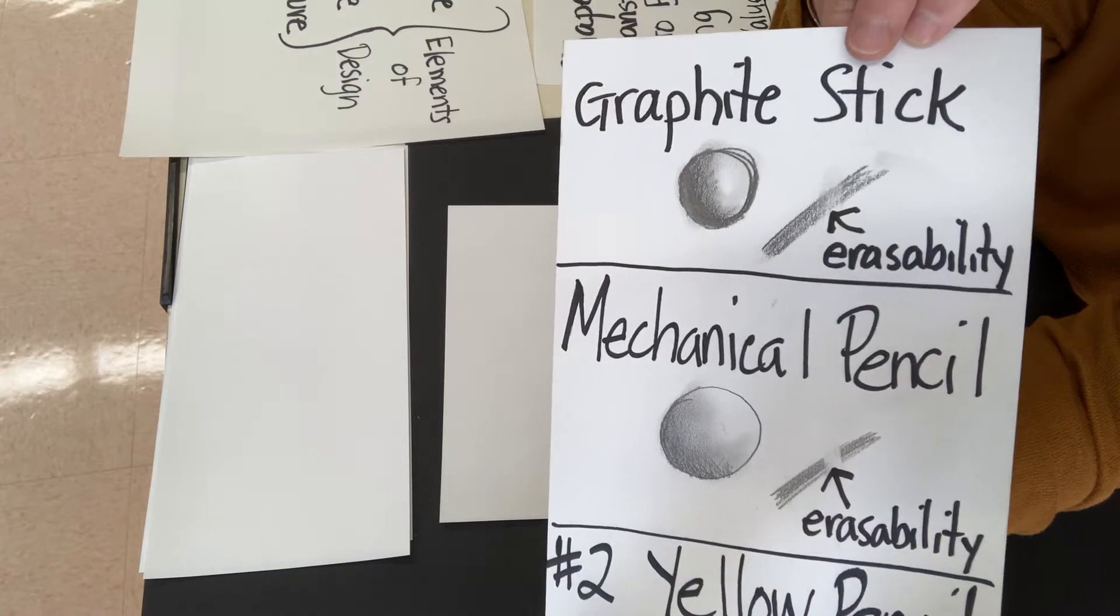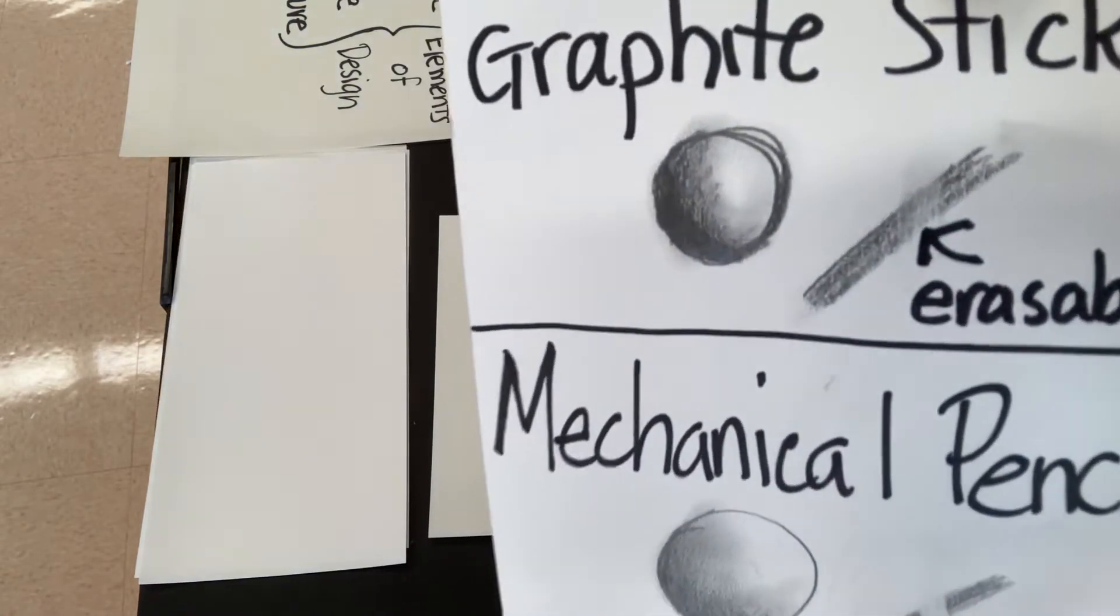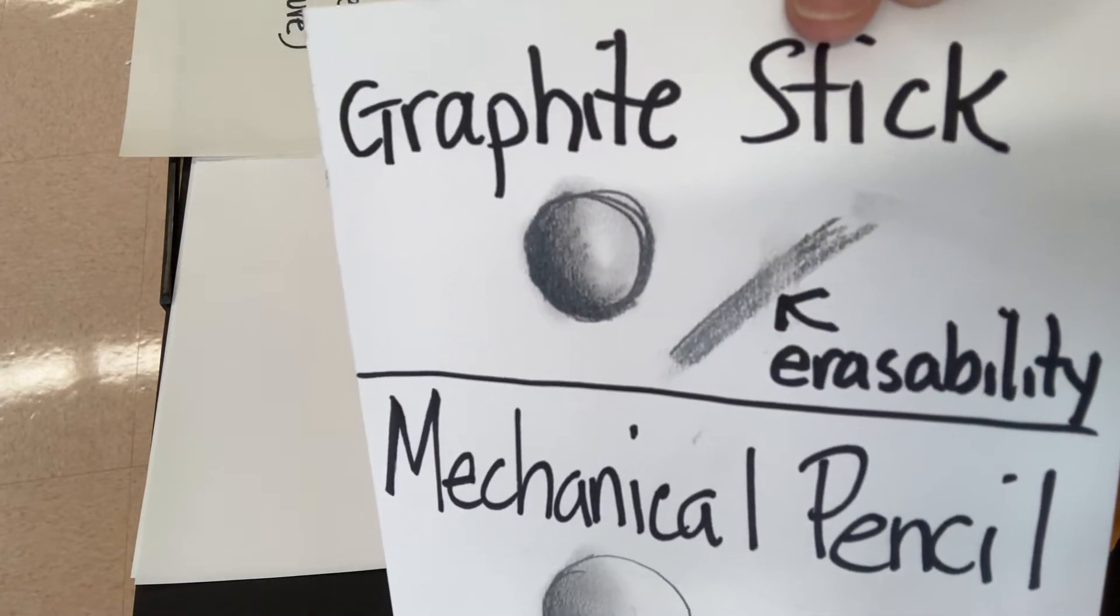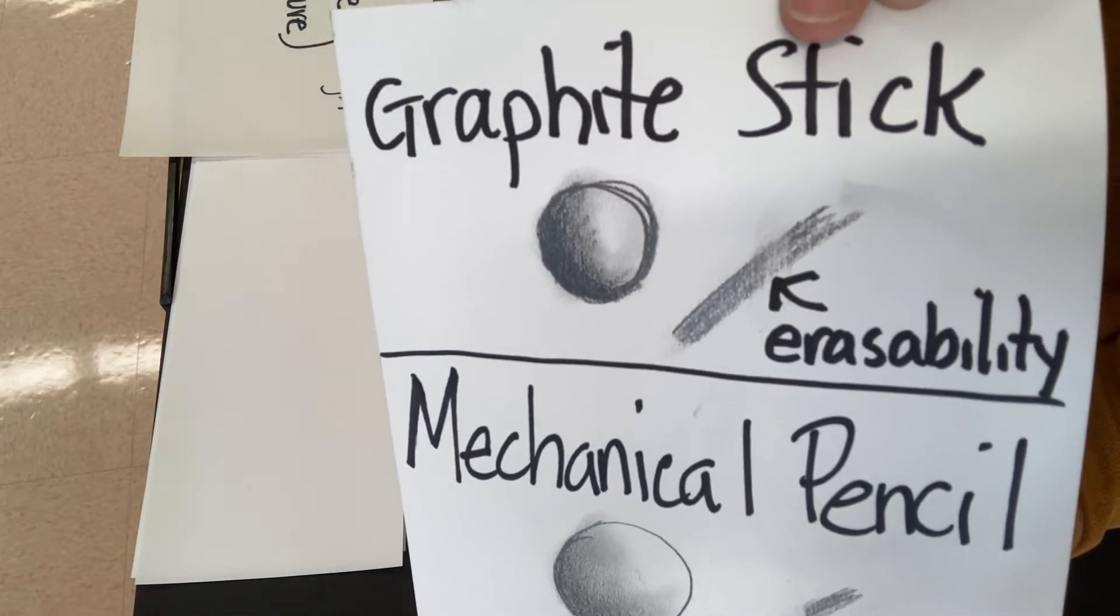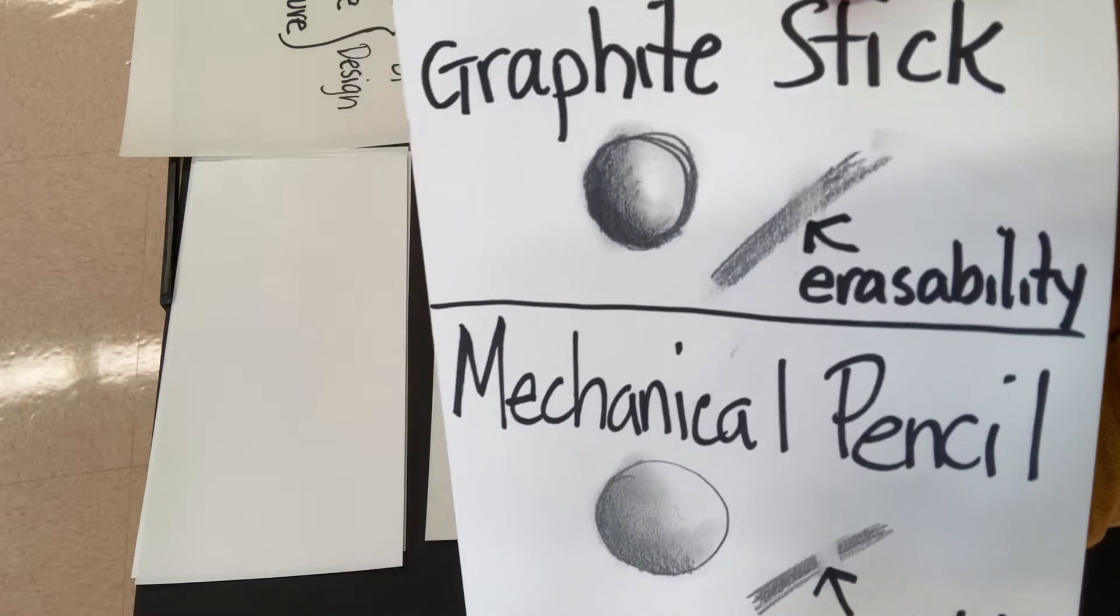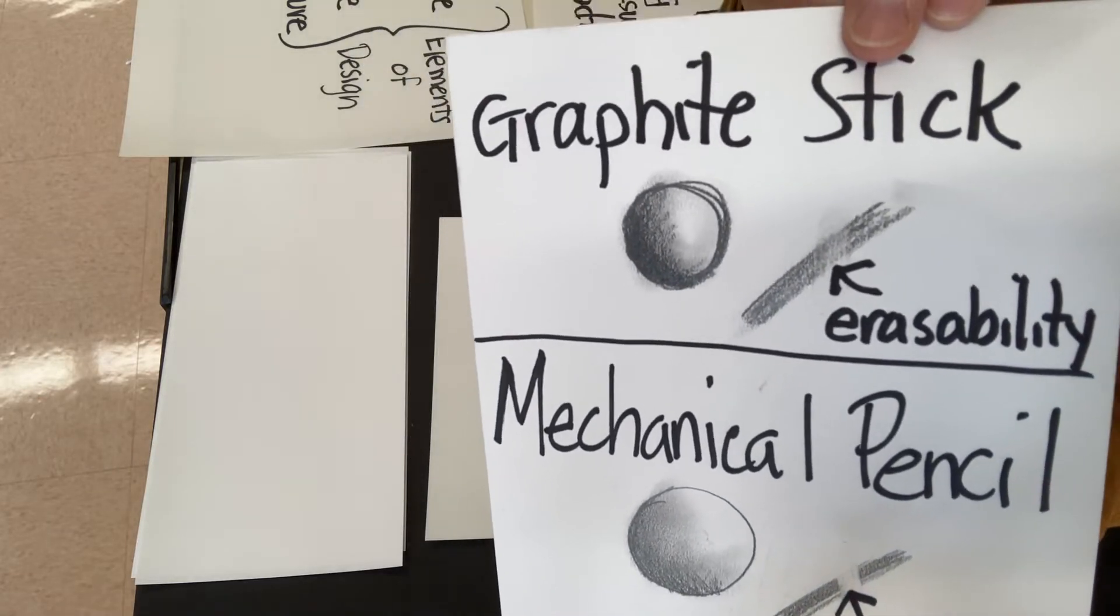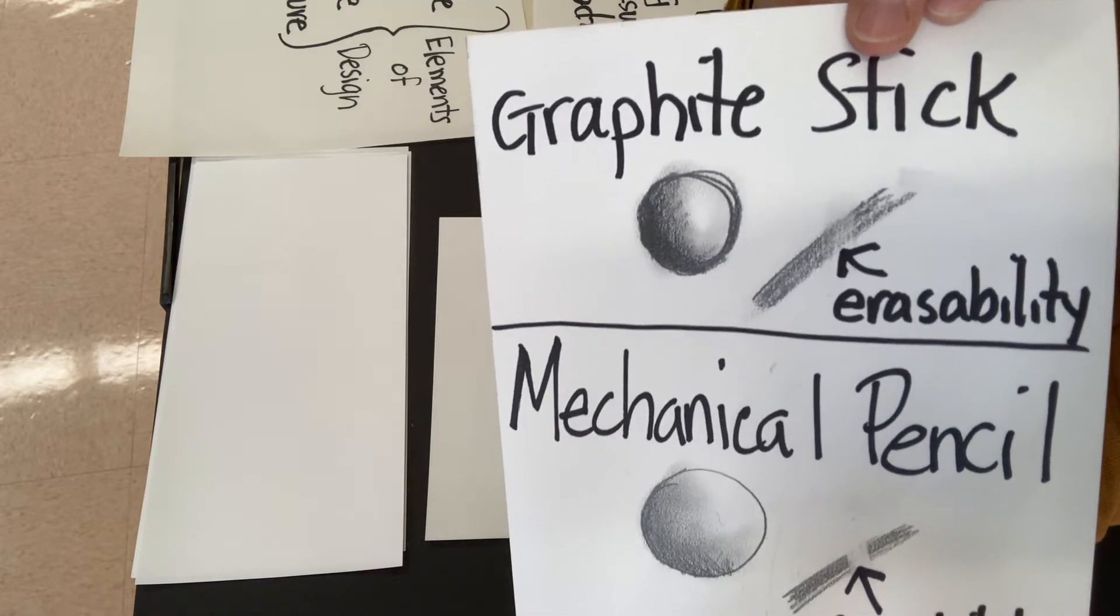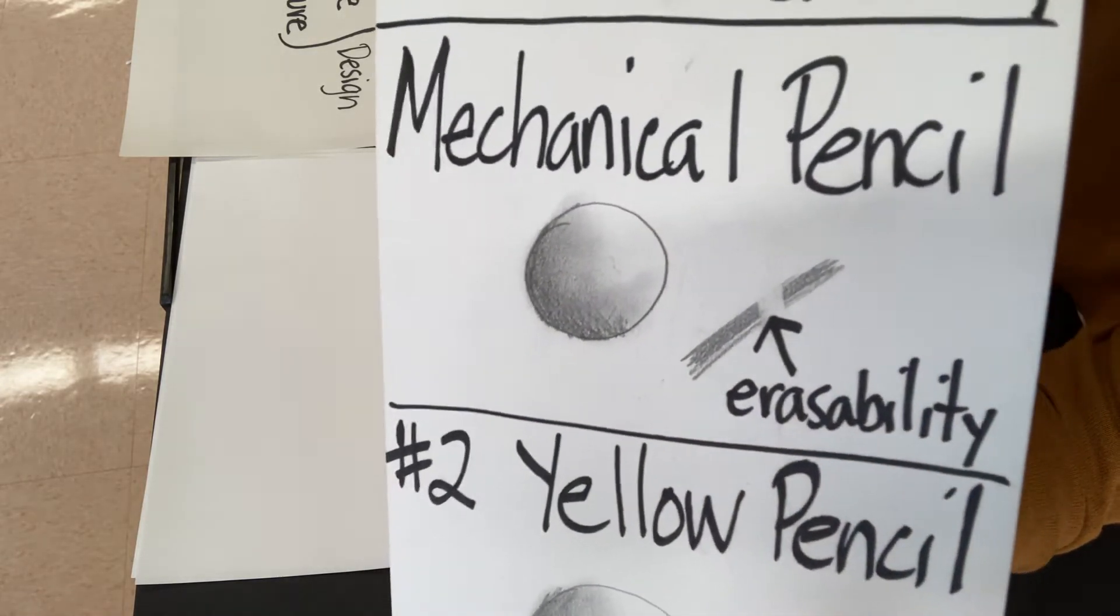In the case of the graphite stick, it seems that the erasability is not very good. So if you make a mistake or you want to change something, it's a little harder to erase, especially on this type of paper that we have here in the art room. Mechanical pencils, a little bit better.